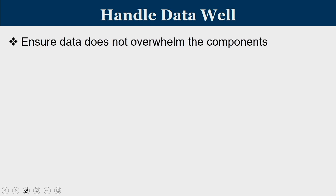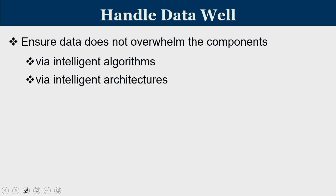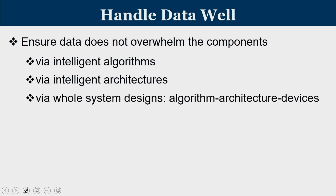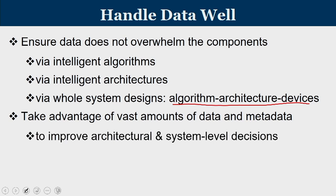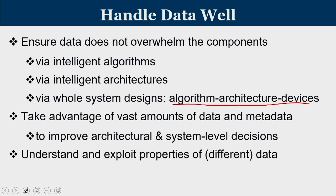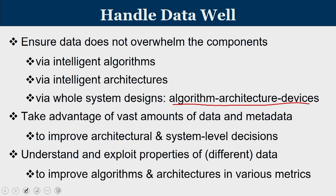What computer architecture of the future is heading toward is: can you handle data well? To ensure data does not overwhelm the components, we can use intelligent algorithms, intelligent architectures, or a whole system design by clubbing intelligent architectures and algorithms together. We should also take advantage of vast amounts of data and metadata to improve architectural and system-level decisions, and understand and exploit properties of different data to improve algorithms and architectures across various metrics.